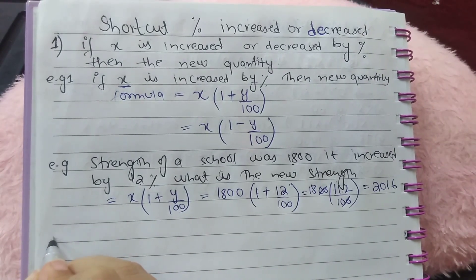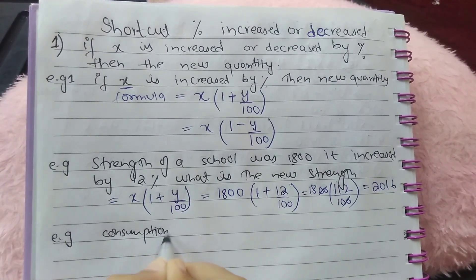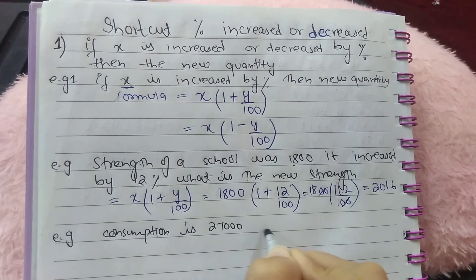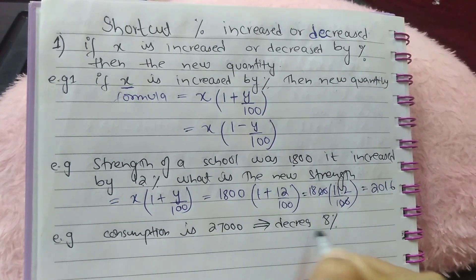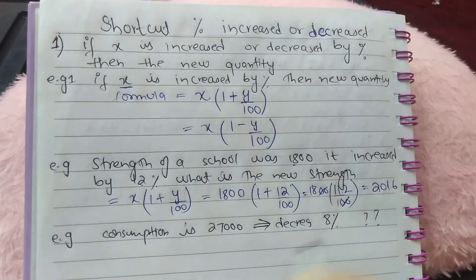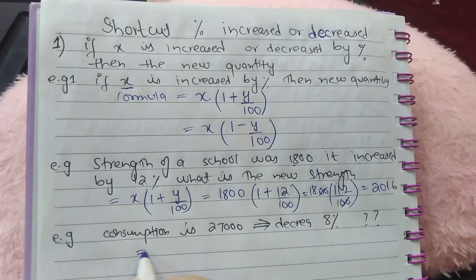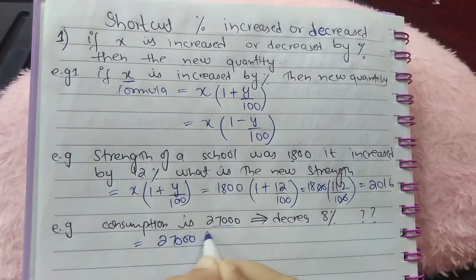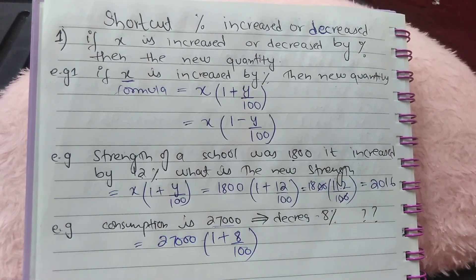Doing another example: if consumption is 27,000, it is decreased by 8 percent, what is the new consumption? So as here is decreased, what is X? X is 27,000. What is Y? Y is 8 percent.